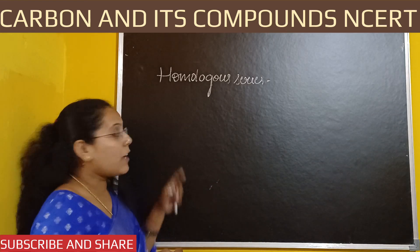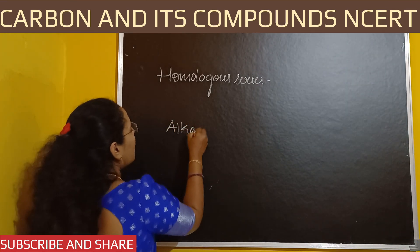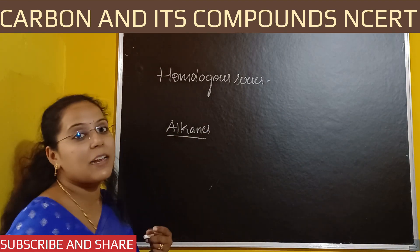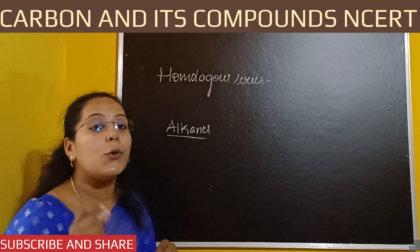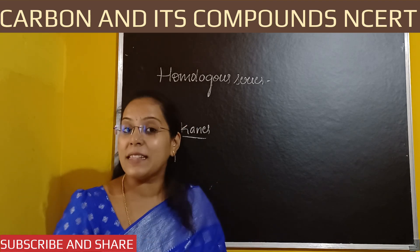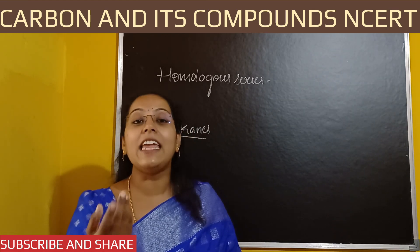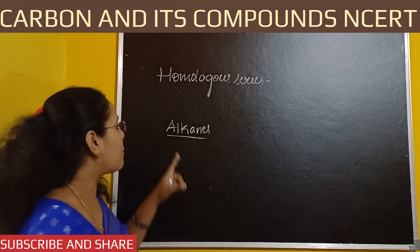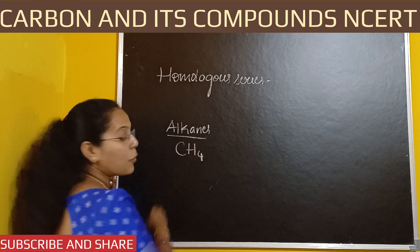Let me explain with an example first, and then I will write the definition. For example, let us take alkanes. Alkanes belong to saturated hydrocarbons. The first member of alkanes is methane, and the molecular formula is CH4. The second member is ethane, and C2H6 is the molecular formula.